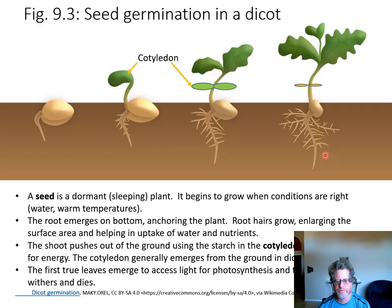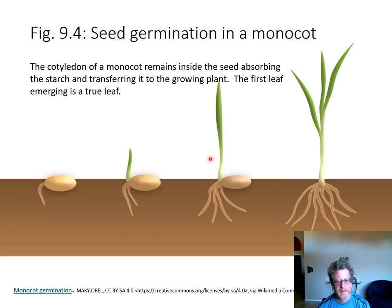Here's a monocot — a monocot is also a flowering plant, and corn is an example. In a monocot, the cotyledon stays inside the seed and the first leaf to come out is the true leaf. You can see the roots and the shoot, and by about 14 days you'll probably have three leaves.